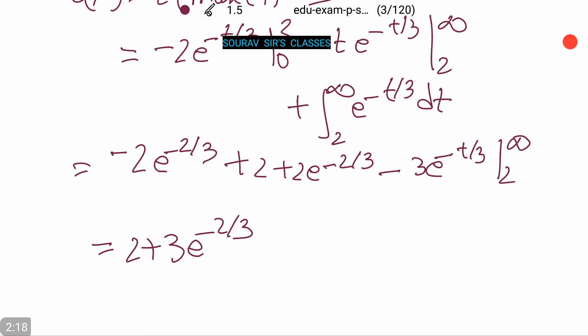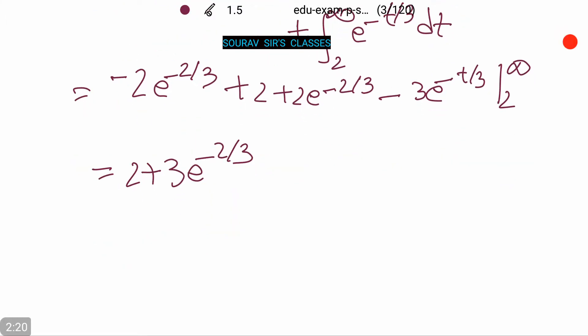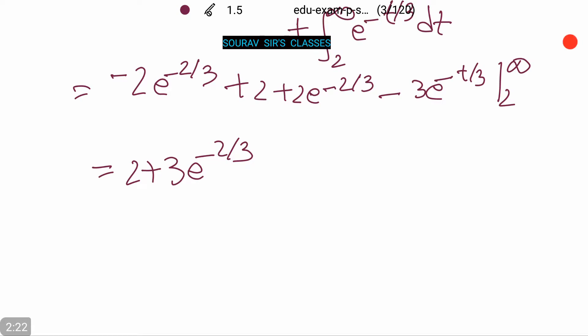Alternatively, with probability 1 minus e to the power minus 2/3, the device fails in the first two years and contributes 2 to the expected value. The remaining probability expected value is 2 plus 3 equals 5.